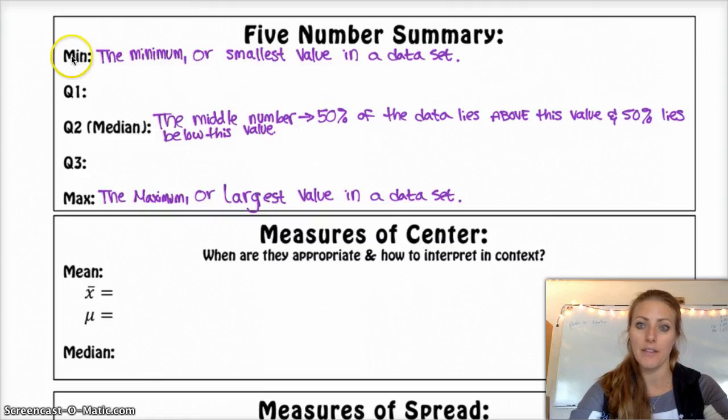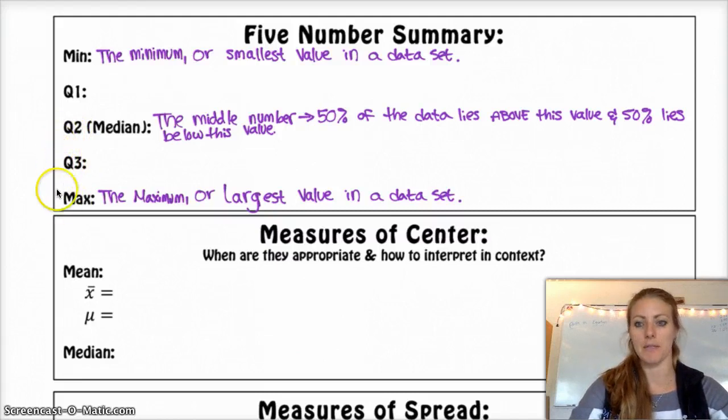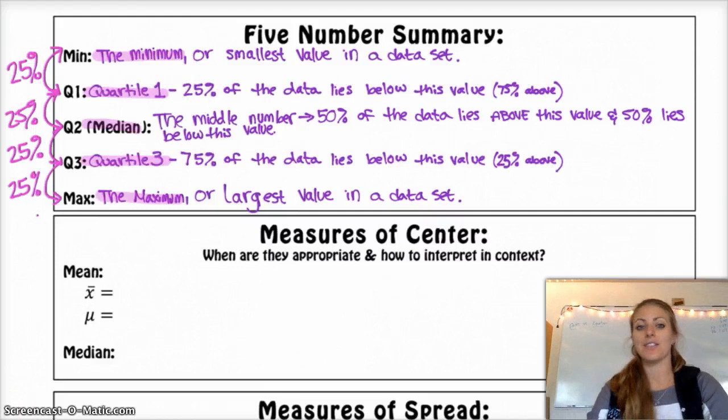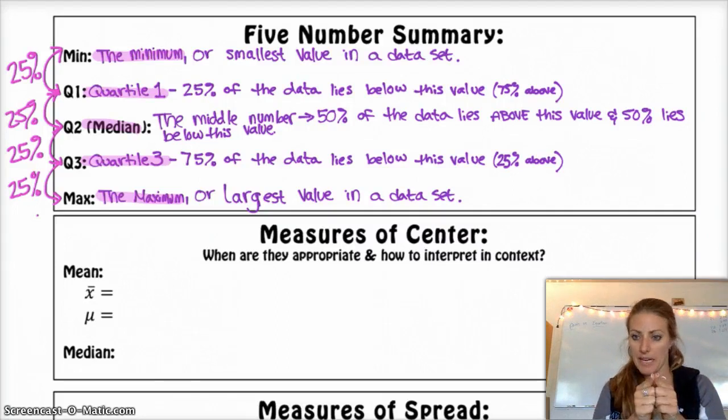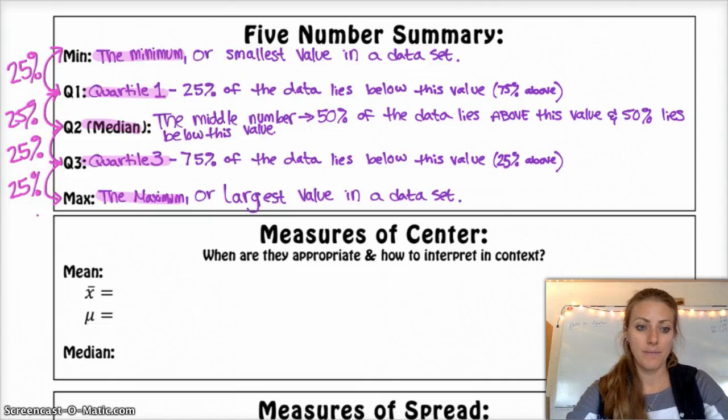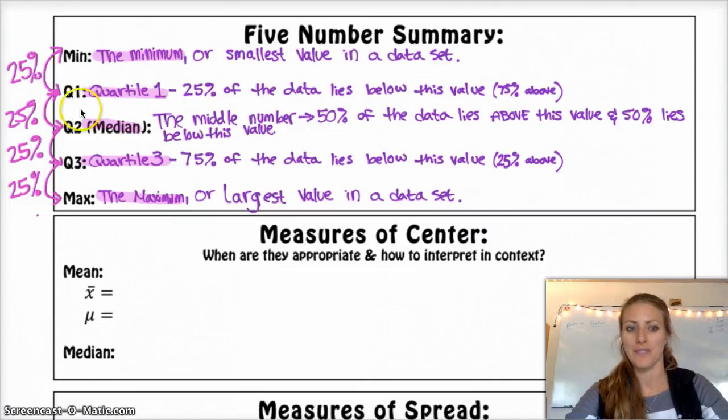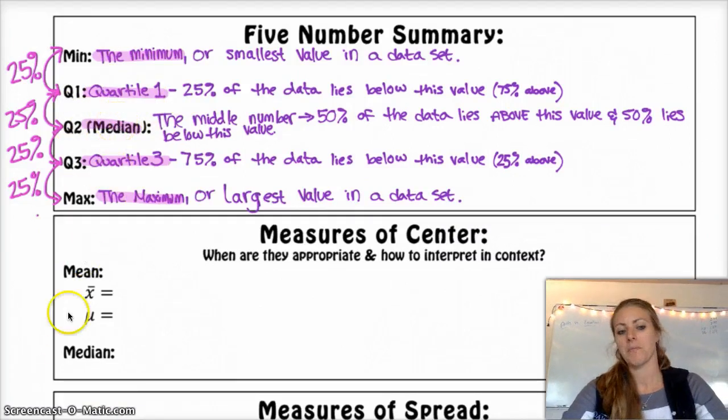It is also called Q2, because the five-number summary splits up the data into quartiles, or fourths. You have in between the minimum and Q1, there should be 25% of the data. This is quartile one, or the first quartile. You should have 25% of the data between Q1 and Q2, and you should have 25% of the data between Q2 and Q3, and then 25% of the data between these two. The reason we have quartile one and quartile three is because the median is, in fact, quartile two.